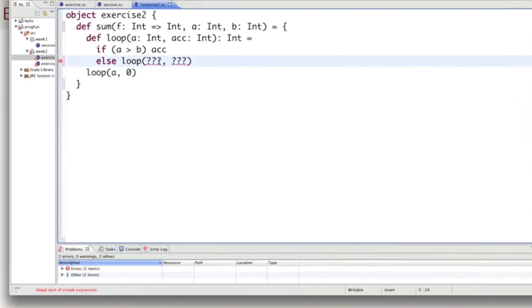And finally, in the recursive call, we would assume that the initial bound gets incremented by one. And the new accumulator is f applied to a plus the previous accumulator.